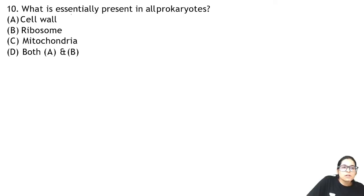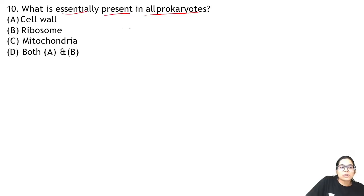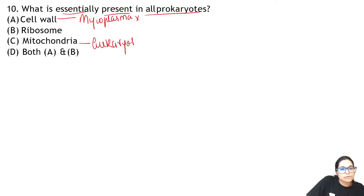What is essentially present in all prokaryotes? Cell wall — but mycoplasma is a prokaryote which does not have a cell wall. Mitochondria are only present in eukaryotes, not prokaryotes. So what remains? Ribosome. Prokaryotes have 70S type ribosomes. So the answer to question 10 is B.